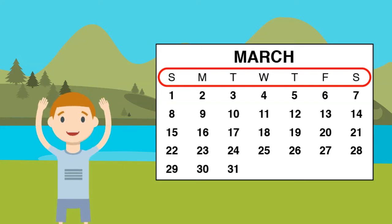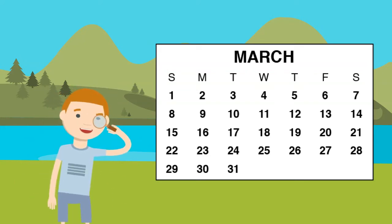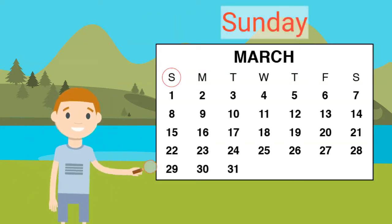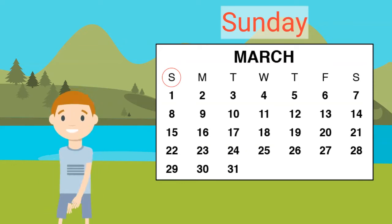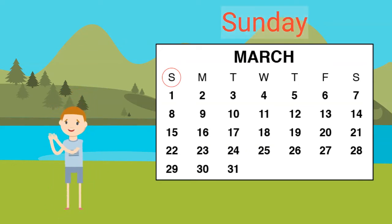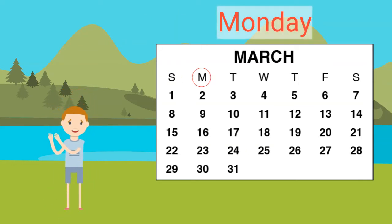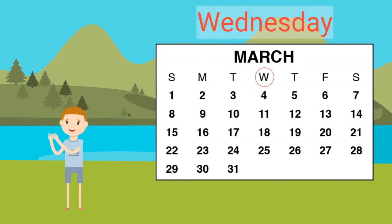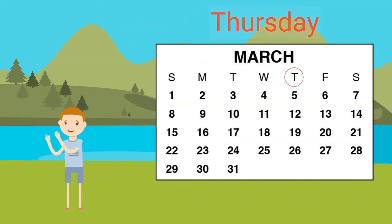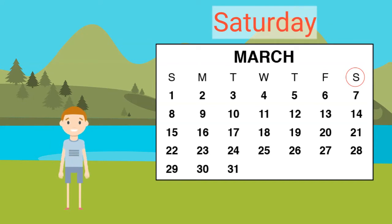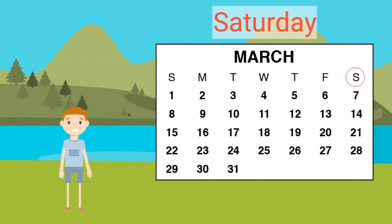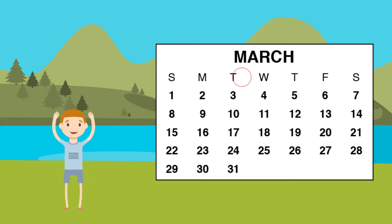Let's go over the days of the week. Sunday is always the first day of the week. After Sunday is Monday, then Tuesday, Wednesday, Thursday, Friday, and finally Saturday.